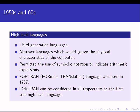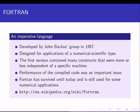Fortran, which stands for formula translation, is often regarded as the first high-level language, born in 1957. Fortran is an imperative language based on a sequence of commands. It was developed by John Backus's group at IBM in 1957, designed for numerical or scientific applications. The first version contained many constructs that were more or less independent of the specific machine, abstracting away details of the underlying hardware.